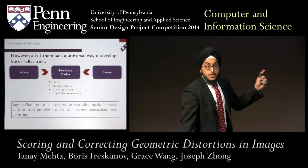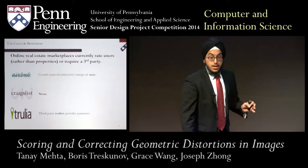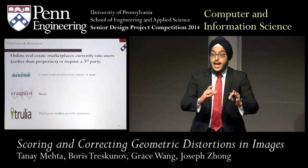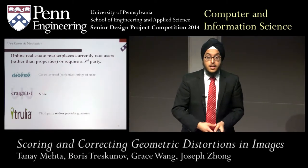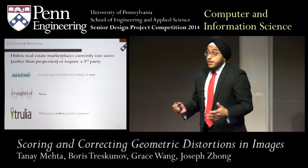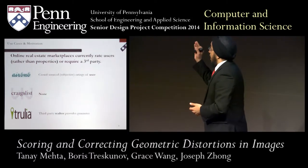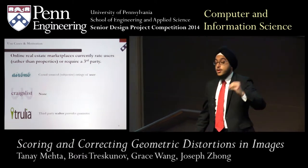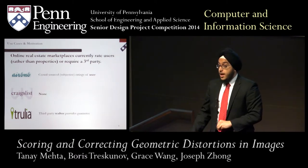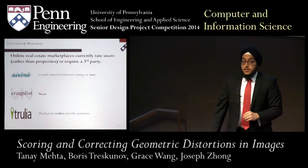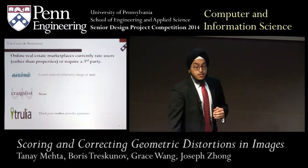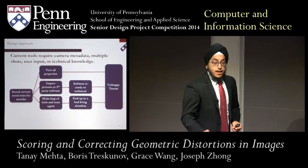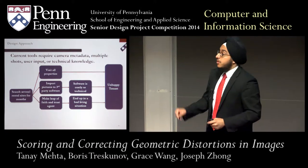Within real estate specifically, we looked at existing solutions. Airbnb has ratings of people rather than of the actual apartment. Craigslist has no verification whatsoever, which is why they can't monetize. Trulia requires trusting a third-party realtor who may be more interested in optimizing their own fees. Most existing technical solutions are heavyweight, very technical, and very expensive.